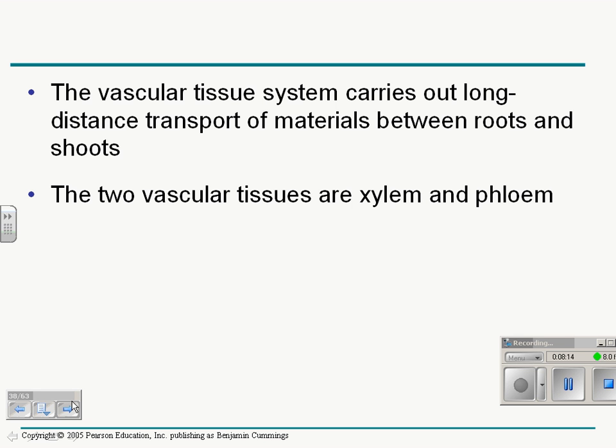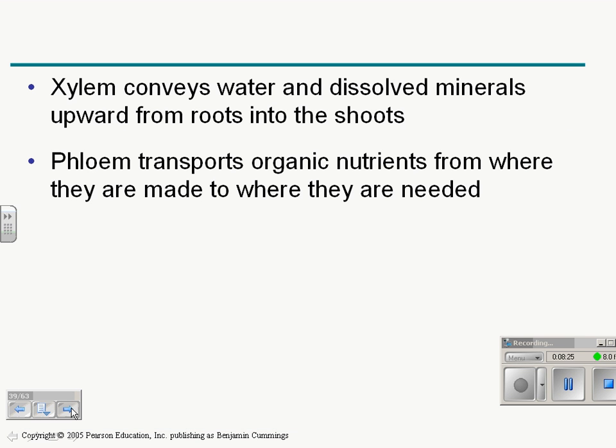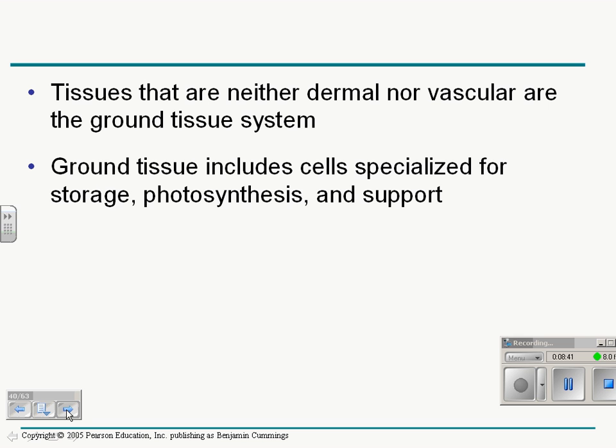Vascular tissues are xylem and phloem. We're going to talk more about xylem and phloem in chapter 39. But those are the vessels of a plant, xylem and phloem. Xylem conveys water up. Phloem transports nutrients from where they are made to where they are needed generally down the plant, because usually they're made in the leaves. And, of course, ground tissue we've already mentioned.